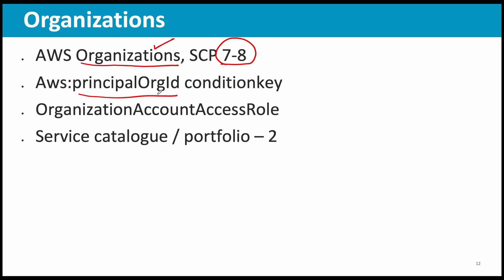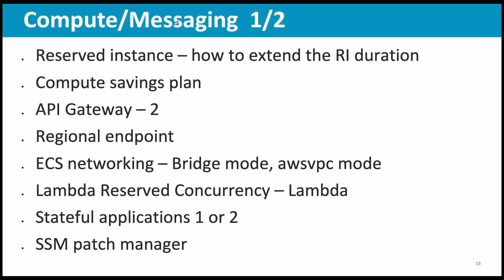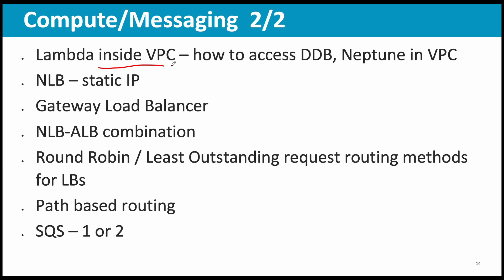AWS principal org ID condition key had a question. Organization Account Access Role had a question. Service Catalog and portfolio had two to three questions. For compute and messaging: Reserved Instances and how to extend RI duration, Compute Savings Plans, API Gateway (couple of questions), regional endpoint, ECS networking bridge mode and AWS VPC mode, Lambda reserved concurrency, stateful applications, SSM Patch Manager, and Lambda inside a VPC and how it communicates with DynamoDB were all covered.